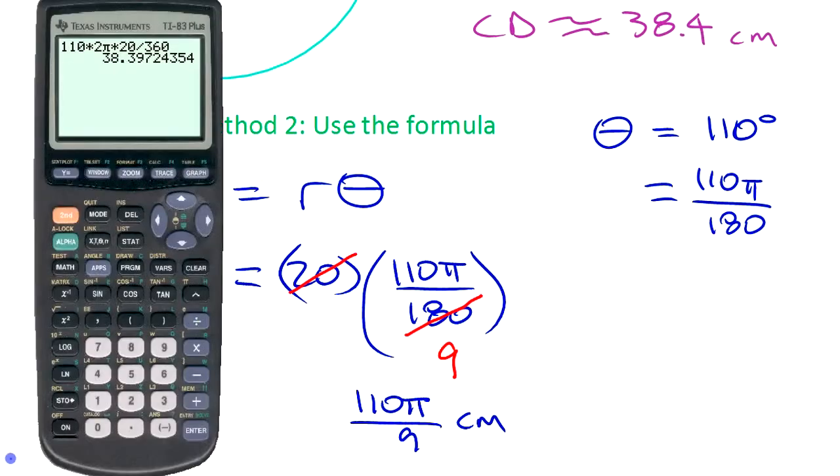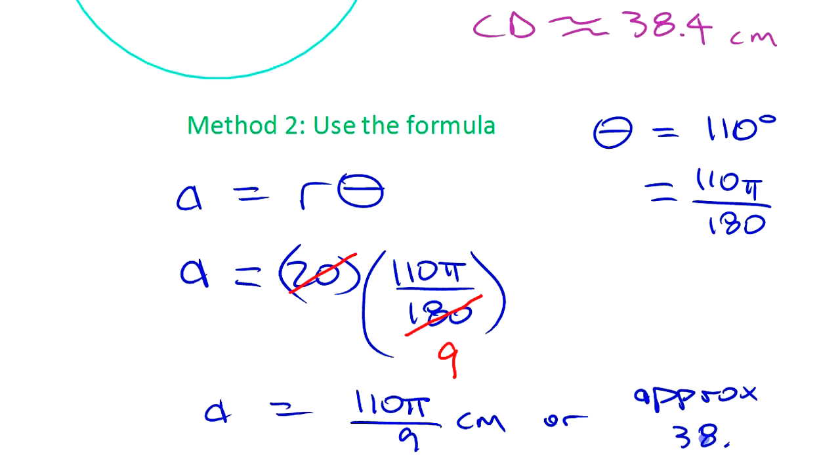Or you could go to your calculator and get the approximate answer. Let's clear this first. 20 times 110π divided by 180 gives you 38.4, same as we had before.